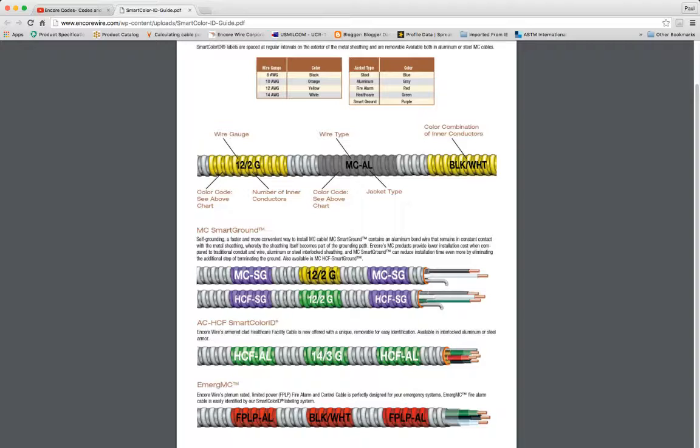And then of course, we have our FPLP, which is going to be used in applications for plenum or mainly for fire alarm systems and control cable application for the fire alarm. This tells you that it's red. So this is what the chart up here says, and that's telling you right there that it's designed for fire alarm applications. It tells you that it's an aluminum armor, and it tells you the color of the conductors that are in there, black and white.